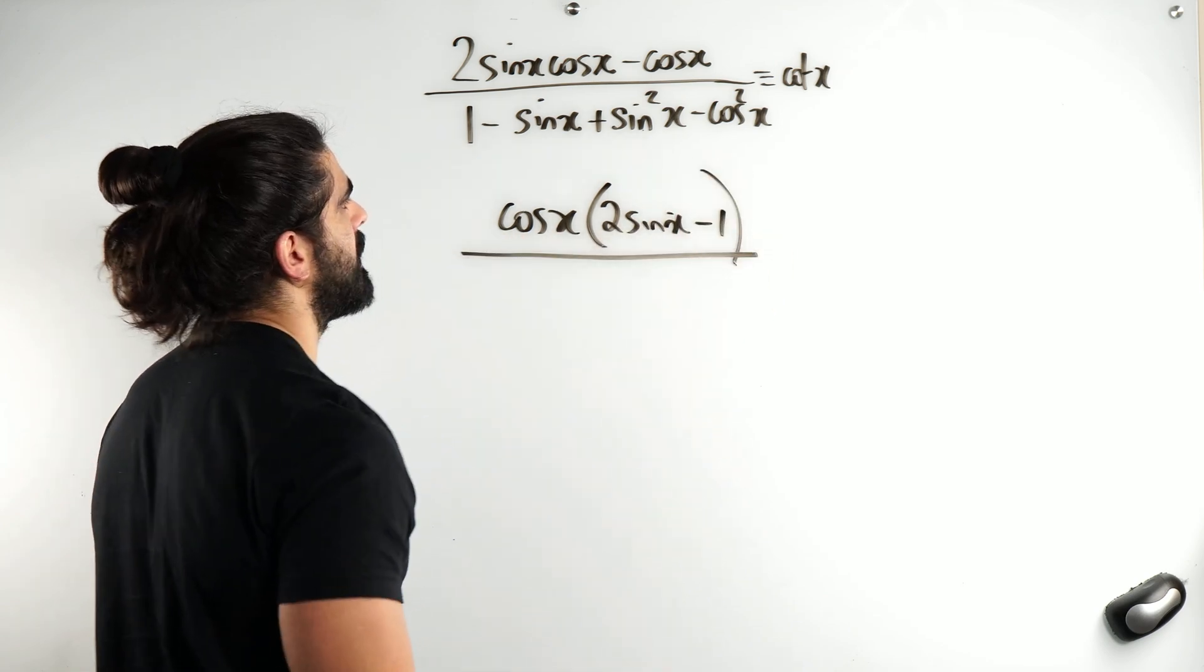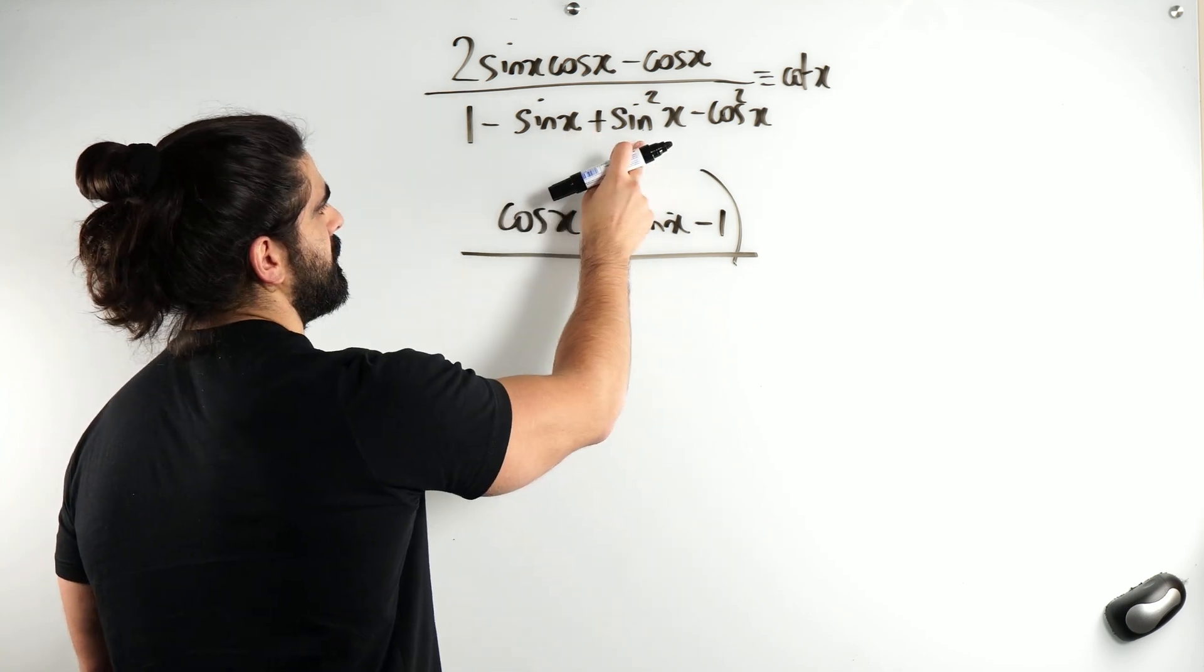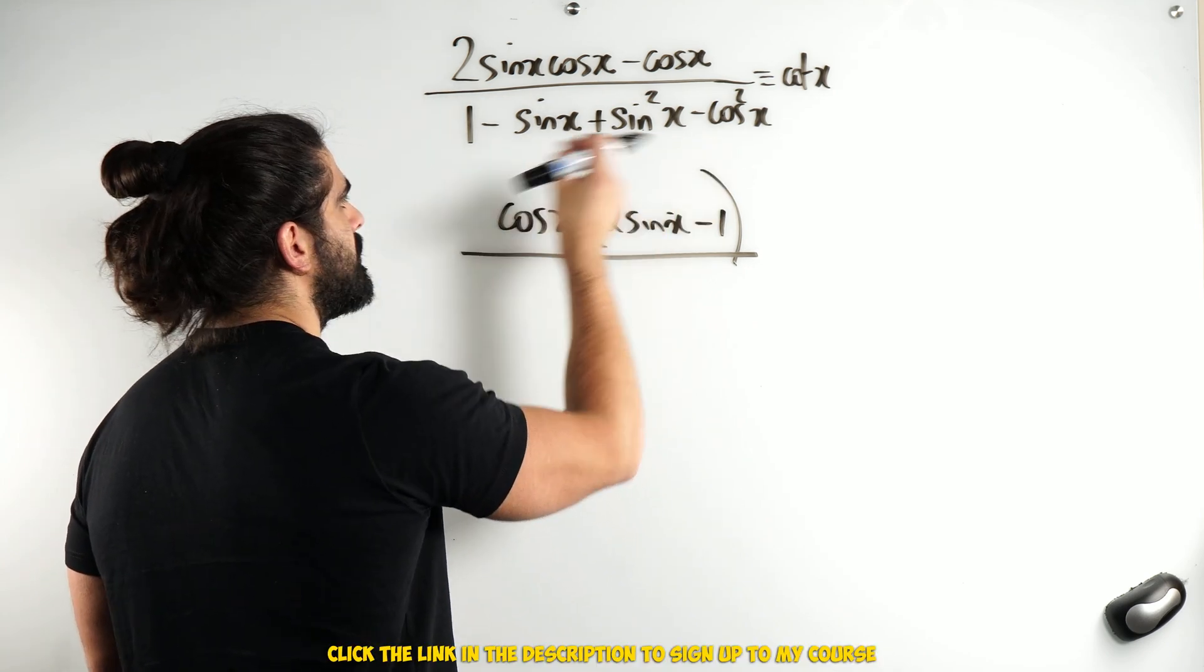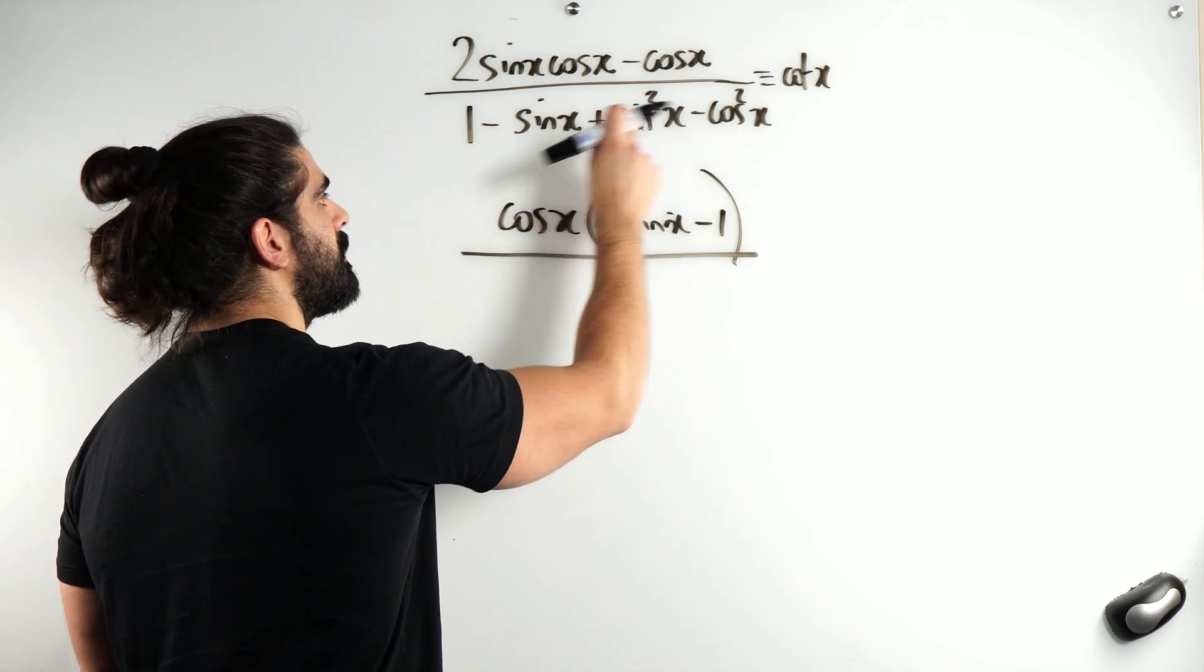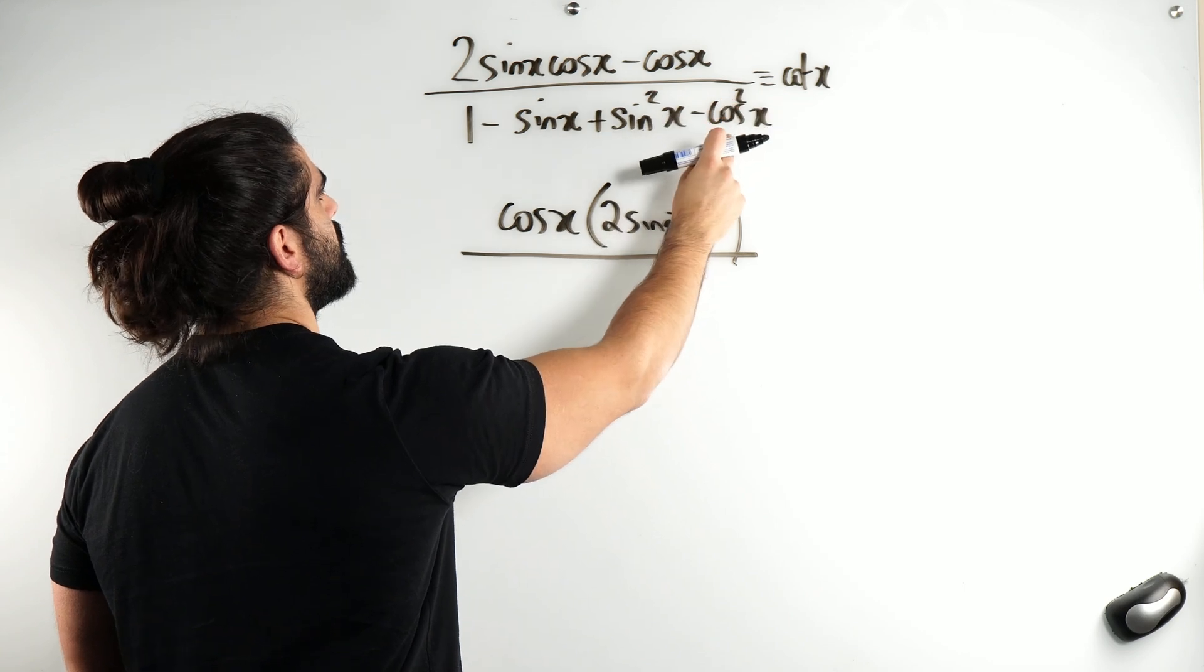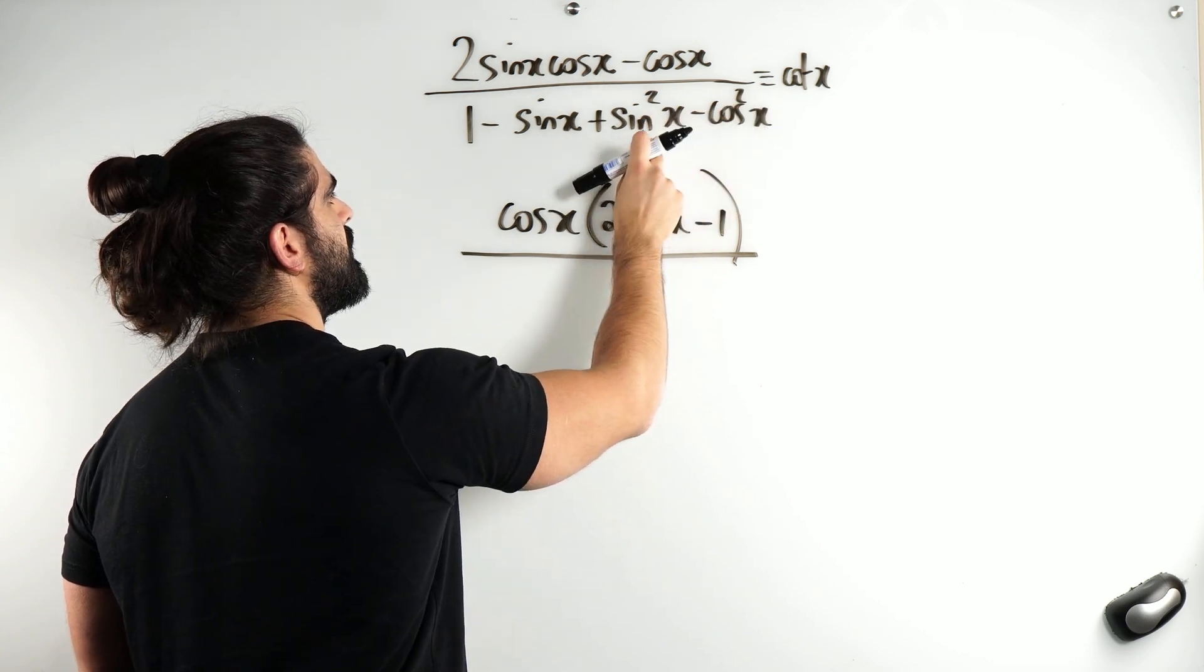Now on the denominator, I see a bunch of sines. Can't really do much there. Negative cos squared, but I have 1. 1 minus cos squared is sine squared, which I can then add to this, right?